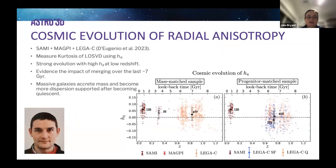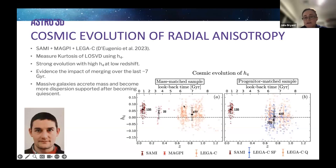The next paper I want to flag was by Francesco. It used SAMI data, MAGPI data, and LEGA-C data in order to look at the evolution over time. SAMI data at low redshift, MAGPI data at mid-redshift, and LEGA-C data getting up to a redshift of one. What he did was measure the kurtosis of the line-of-sight velocity distribution using H4, and found a strong evolution of that H4 index towards lower redshift.